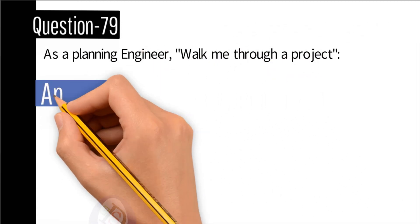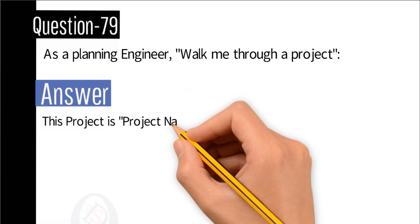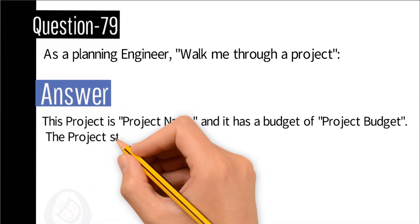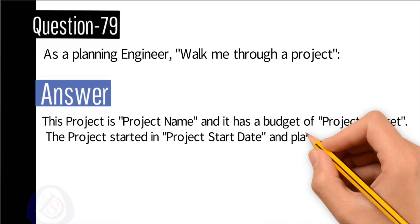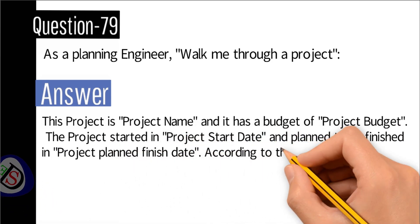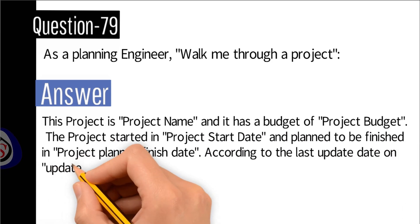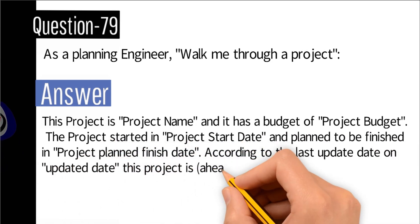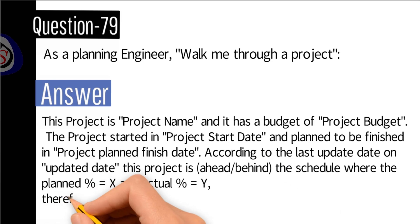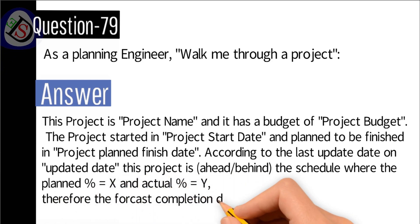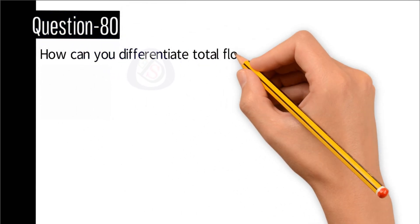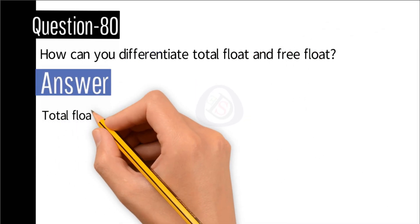Question number 79: As a planning engineer, walk me through a project. Answer: This is a project with name [project name] and has a budget of [project budget]. The project started in [project start] and planned to be finished in [project plan finish date]. According to the last updated date on [updated date], this project is ahead or behind the schedule where the planned percent is equal to X and actual percent is equal to Y. Therefore, the forecast completion date is Z.